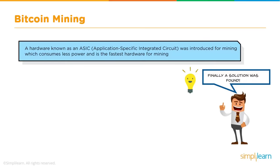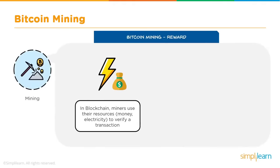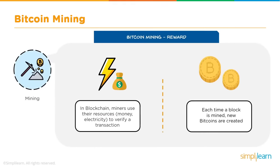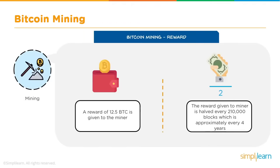In blockchain, each time a block is mined, new bitcoins are created in the network. Bitcoin's total supply is limited to approximately 21 million, and 17 to 18 million have already been mined, leaving only 3 to 4 million. As of today, a reward of 12.5 bitcoins is given to the miner on completing transaction verification. Bitcoin mining reward follows the halving principle — the reward is halved every 210,000 blocks, approximately every four years. After the next threshold, the reward will go down to 6.25 bitcoins.